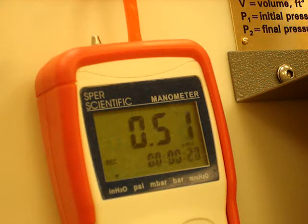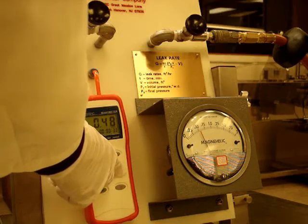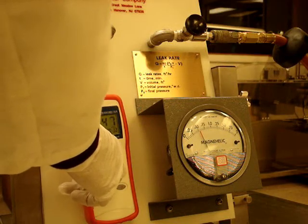The shorter it takes the glove to reach 0.5 inches of water column, the greater the leak rate is. This quick decrease in pressure shows a fast leak rate is apparent.